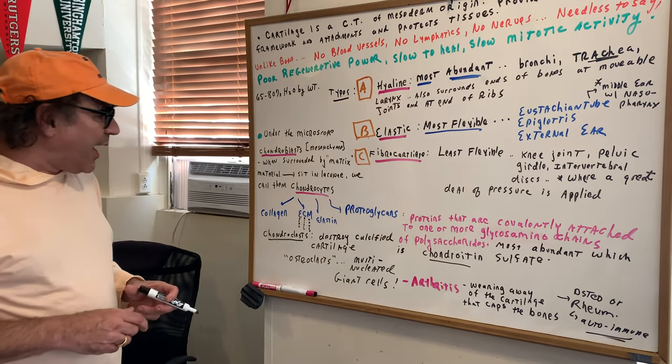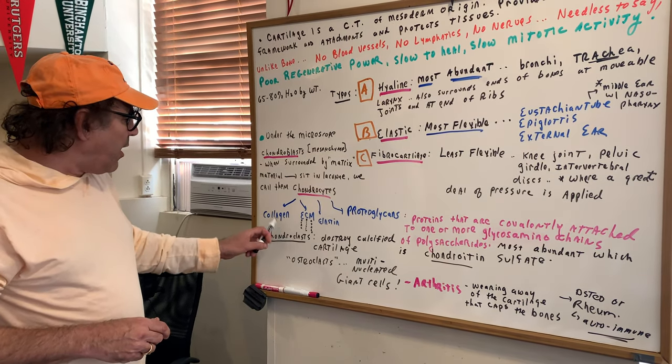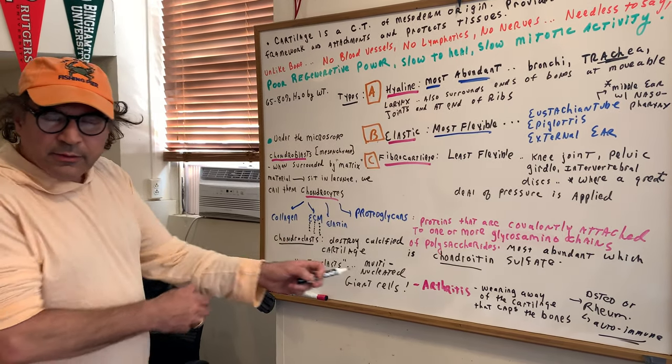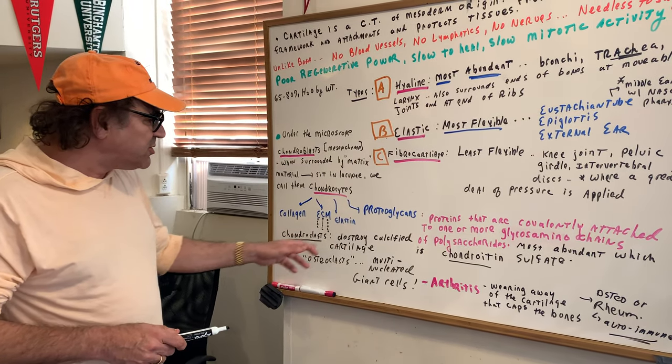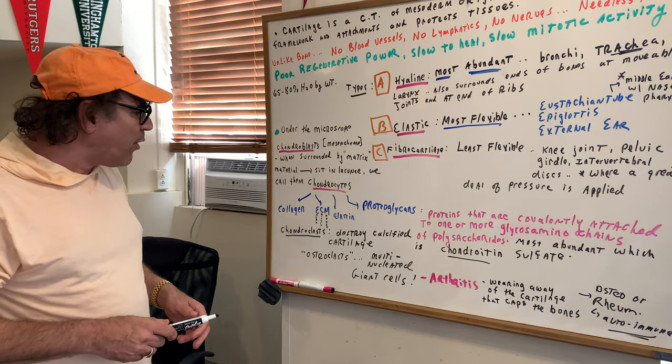And last but not least, you would also see a chondroclast. Now, just like an osteoblast, what they do is these are going to be involved in destroying calcified cartilage.